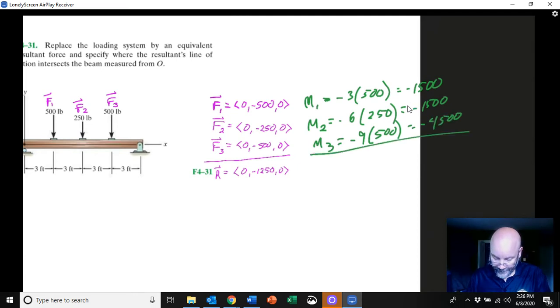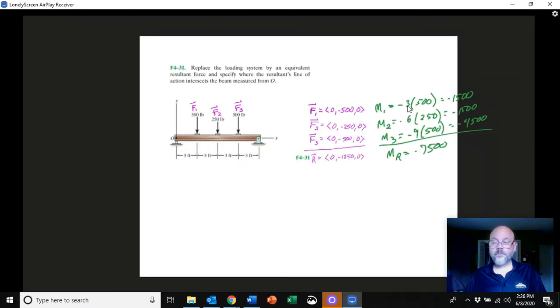Alright, and so my resulting moment then is minus 7500. So what I want to do now is I want to think about our resultant force.